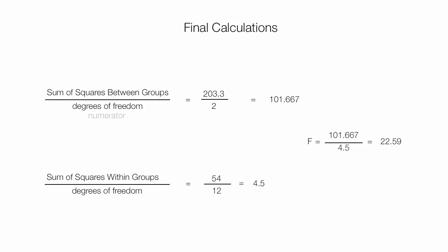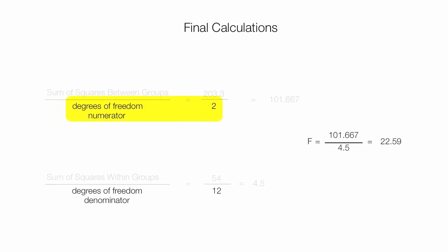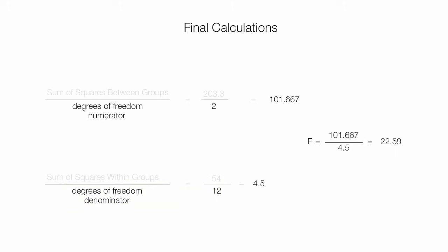Now I need to look this up in a table. I need my degrees of freedom for the numerator, which is the top part of the ratio, and degrees of freedom for the denominator, the bottom part. You often see the F score written as F(2, 12), where 2 is the degrees of freedom of the numerator and 12 is the degrees of freedom of the denominator. This equals the actual F-ratio, which is 22.59.